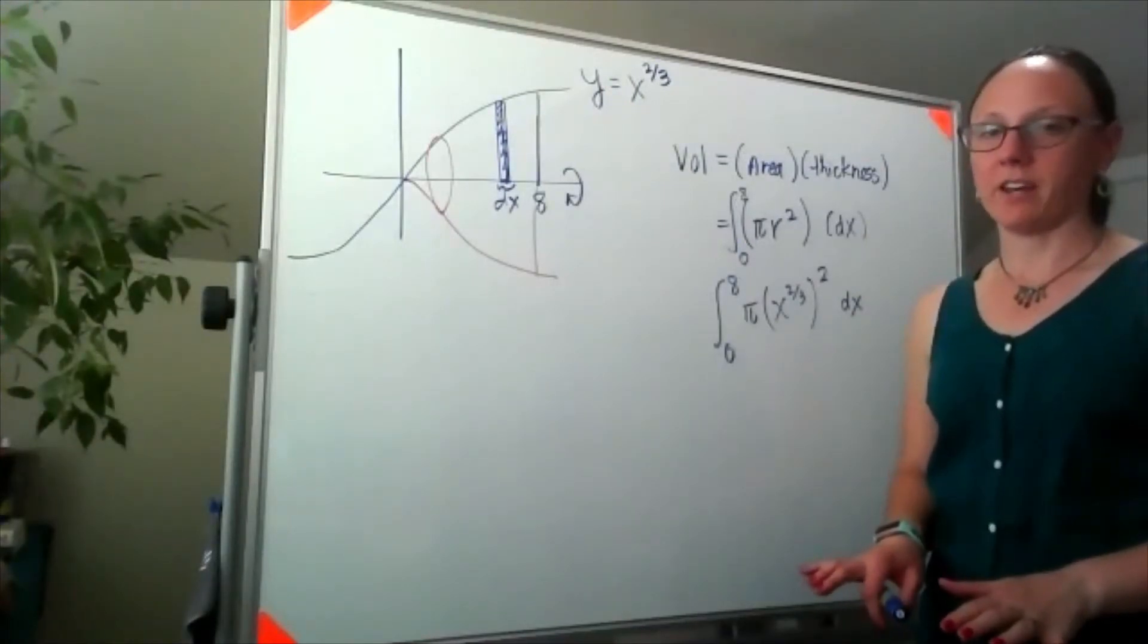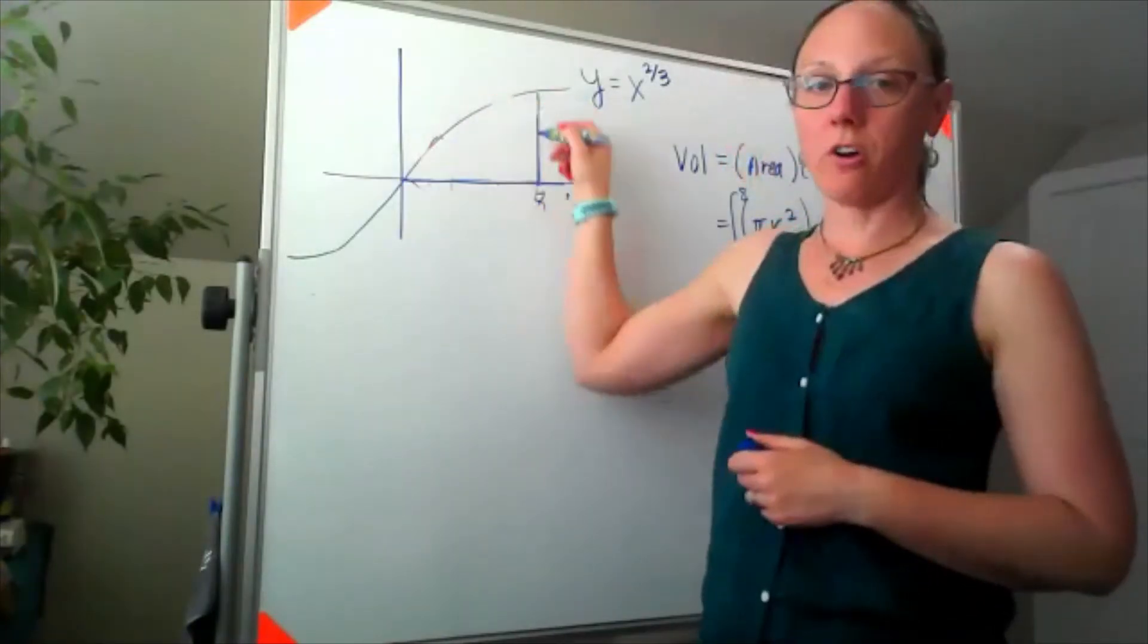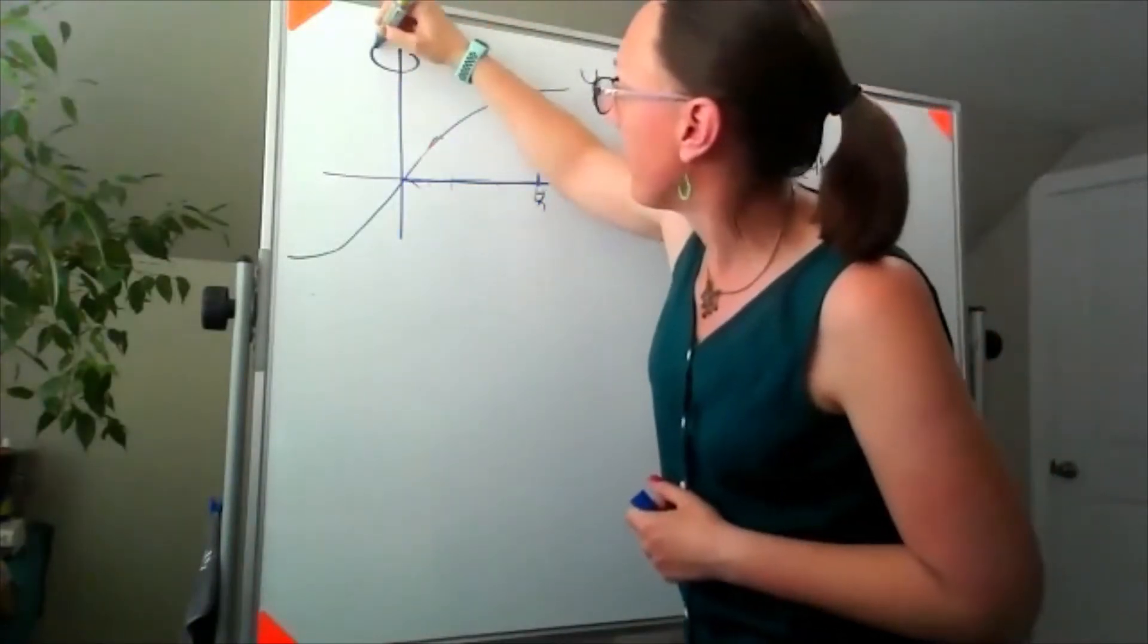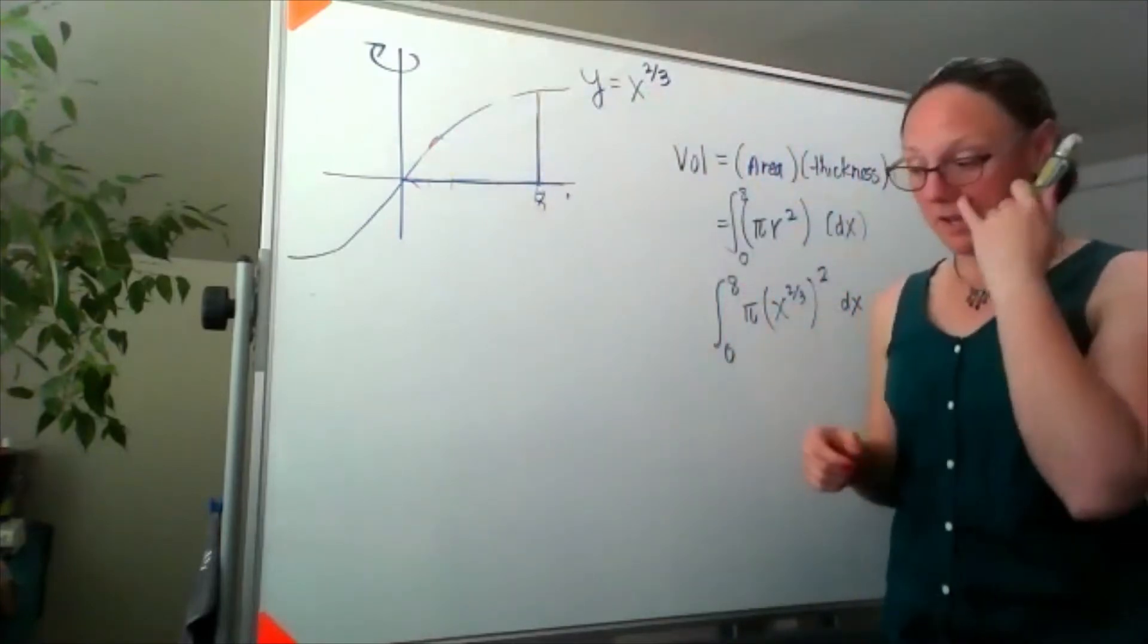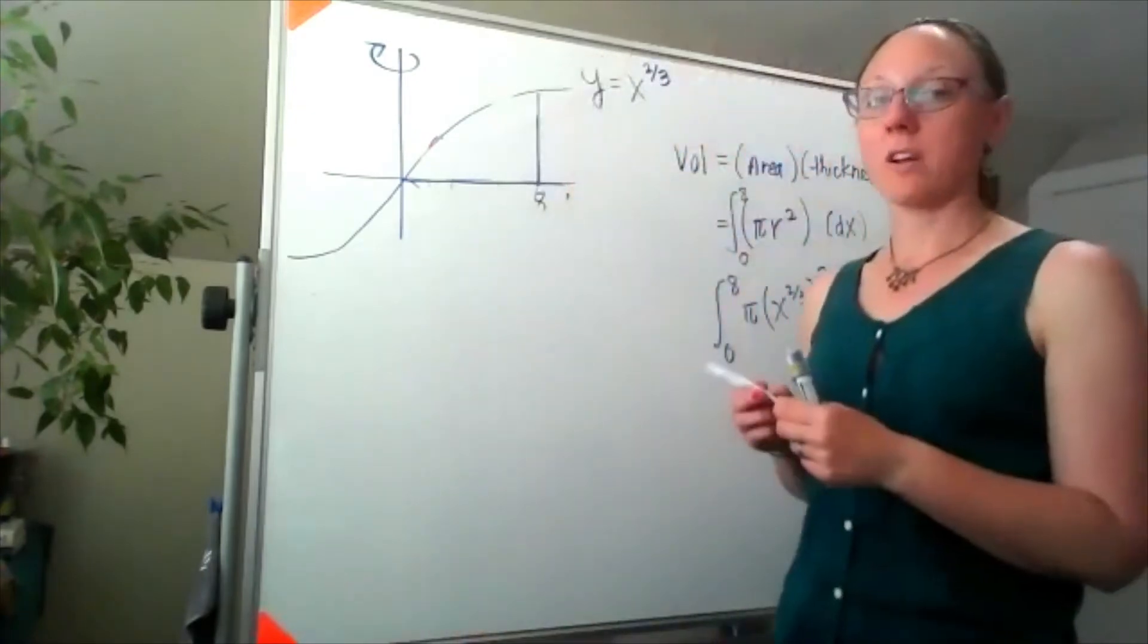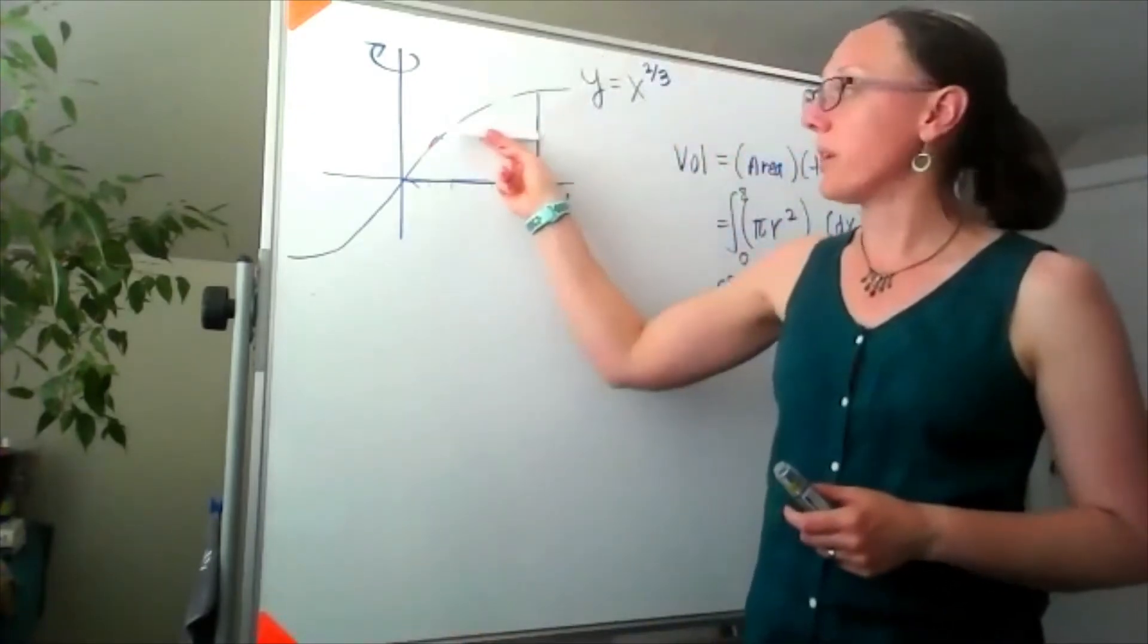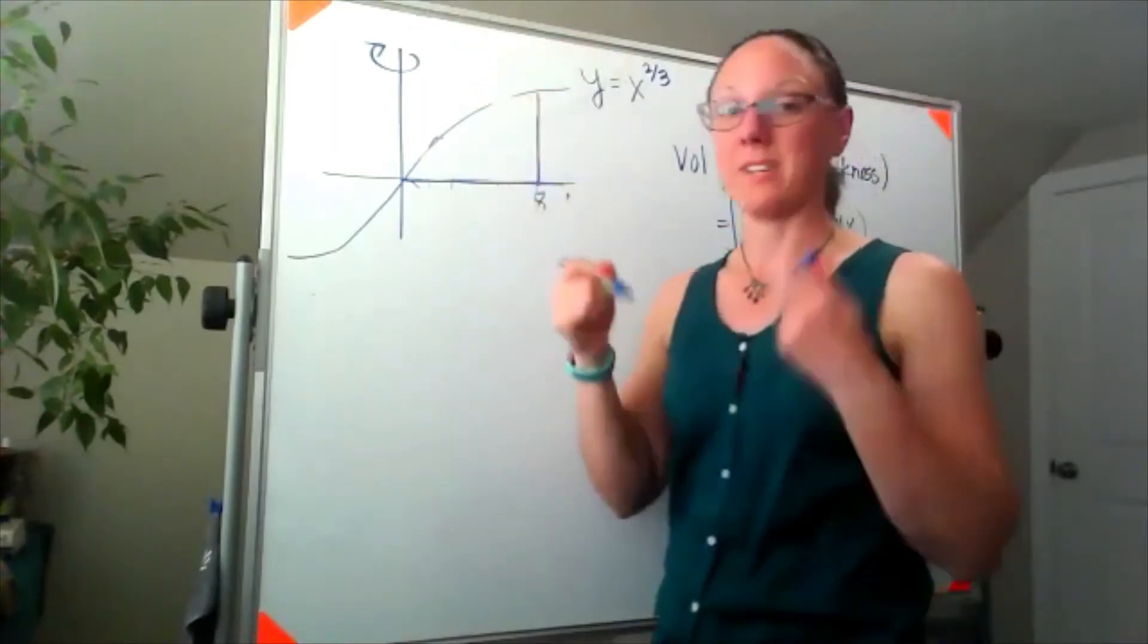I'm gonna pause here for a second and then revolve around a different axis. I want to revolve that same thing around the y-axis. I'm gonna need to take my cross section perpendicular to the axis that I'm revolving around, so I'm gonna take my cross section just like that.